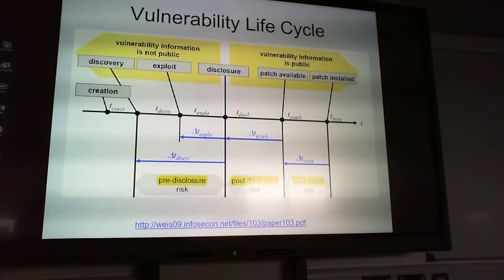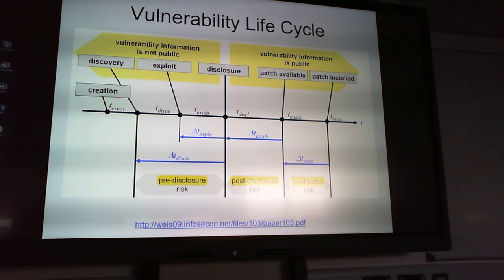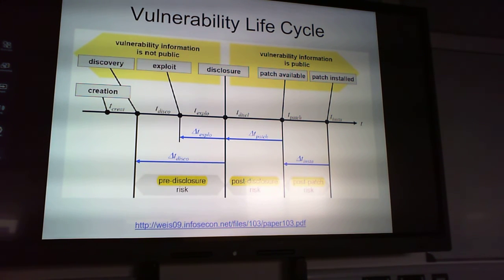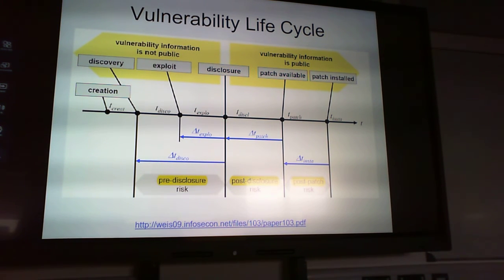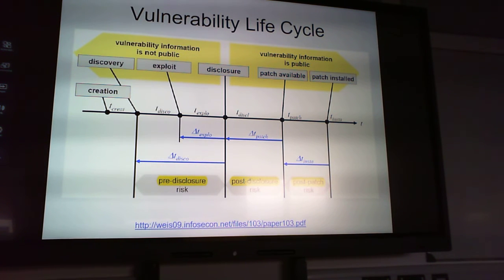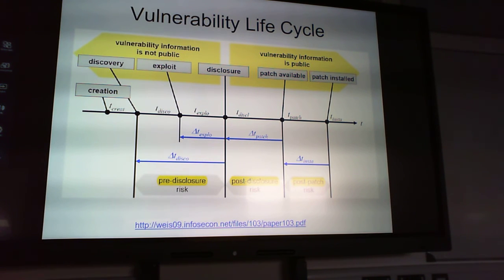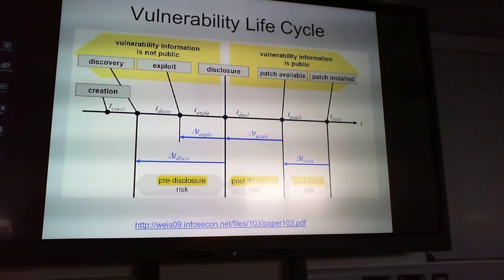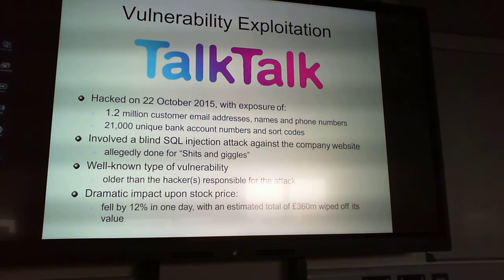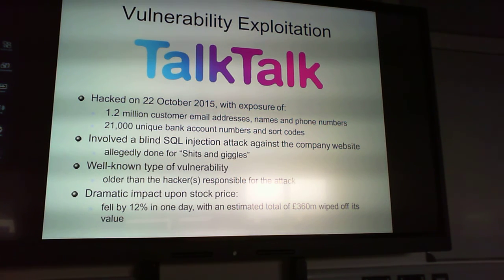The vulnerability life cycle has different stages: when the application is created, when a vulnerability is discovered, when we learn to exploit it, when it gets disclosed and becomes public — usually prompting a patch rollout — and when the patch is installed. This gives us pre-disclosure risk, post-disclosure risk, and post-patch risk — the window between when a patch is available and when it's actually installed, which is something vendors have to deal with quite a bit in industry.